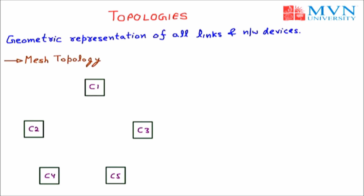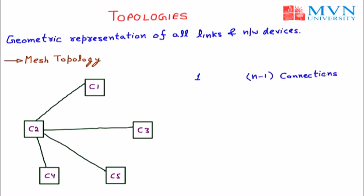For example, computer C2 is connected with C1, C3, C5, and C4. So a single computer can be connected with n minus one connections. Here we have five computers, so it is connected with five minus one, which equals four connections: C2 to C1 (one), C2 to C3 (two), C2 to C5 (three), and C2 to C4 (four). Here n equals five and connections are four.